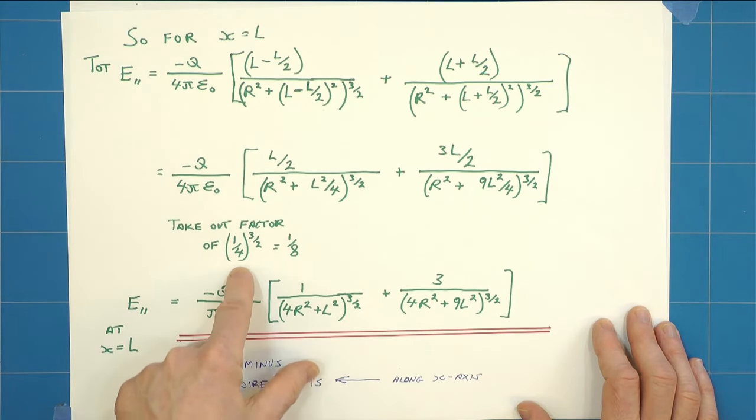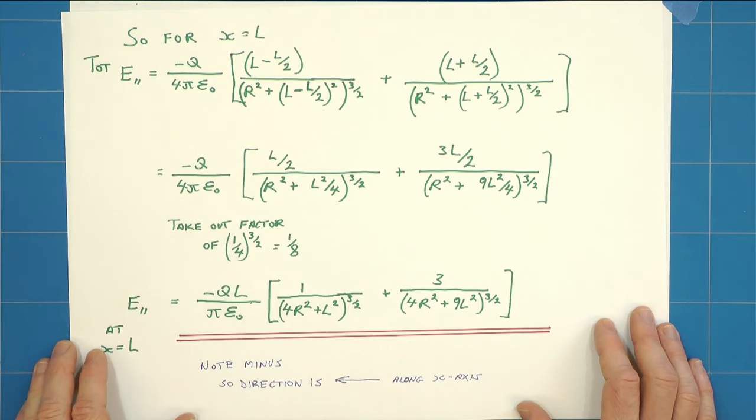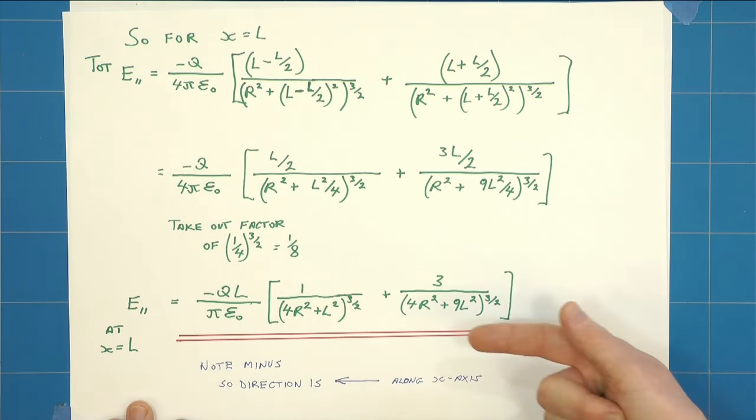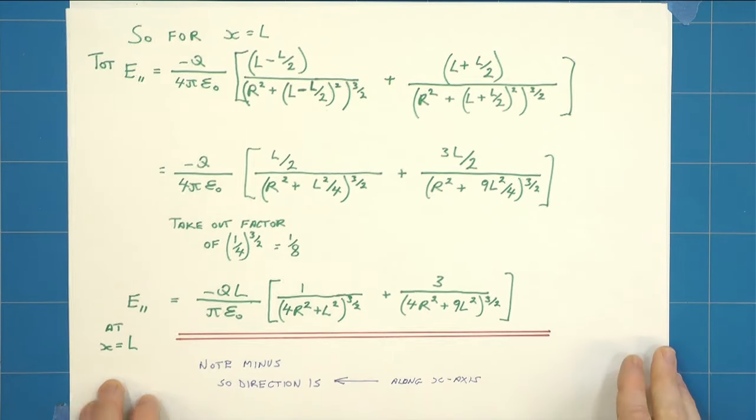We can see if we think about it that we can take out a factor of a quarter to the power 3 over 2, which is actually 1 over 8. So the first answer simplifies to this at x equals L. Note the minus sign, which means that the field is in that direction. No surprises since